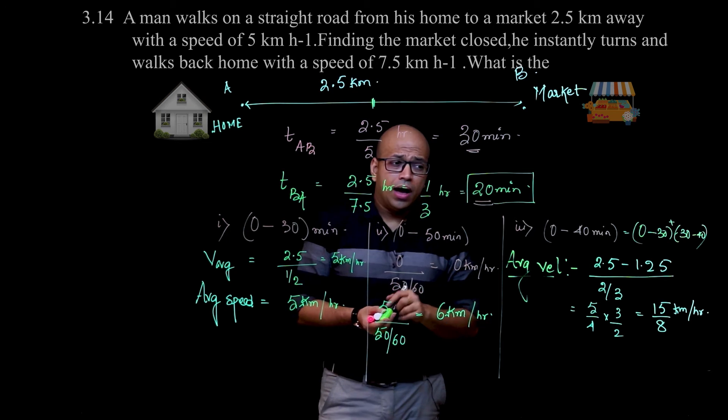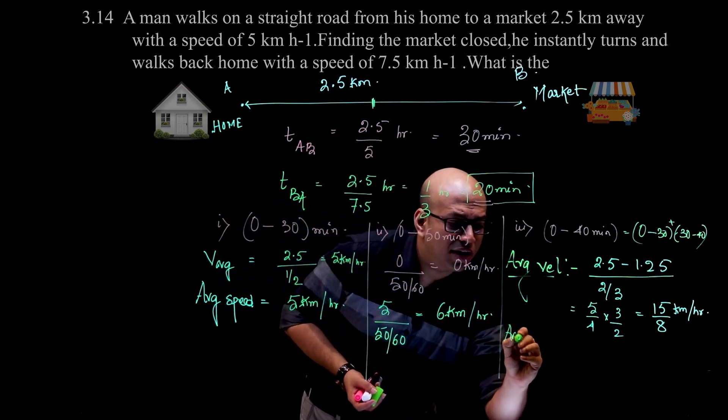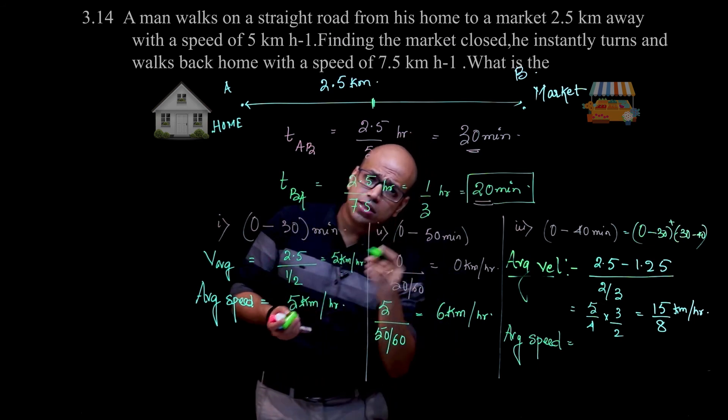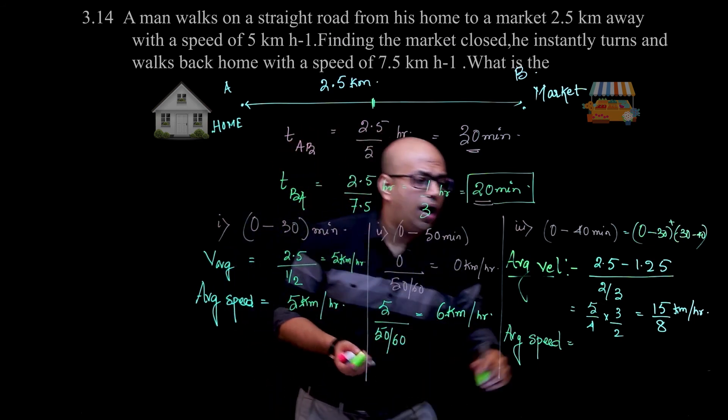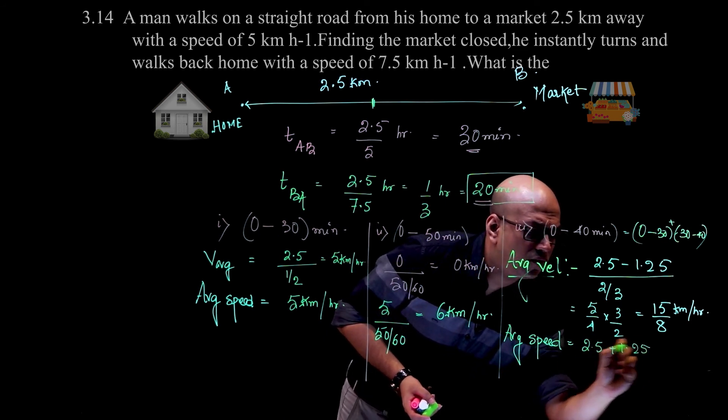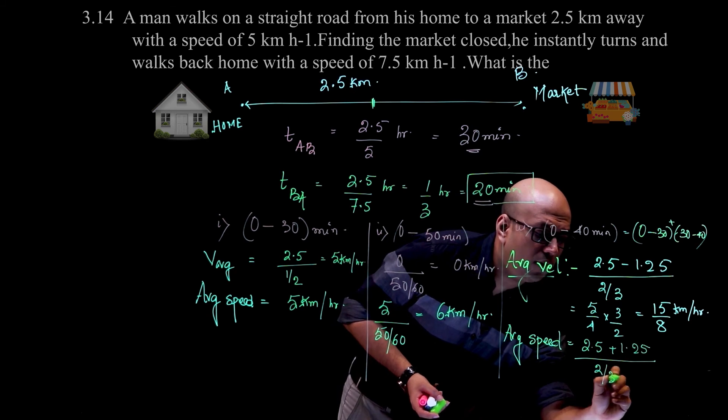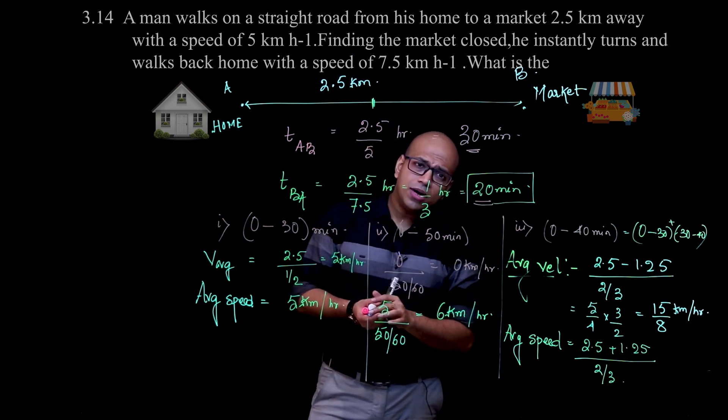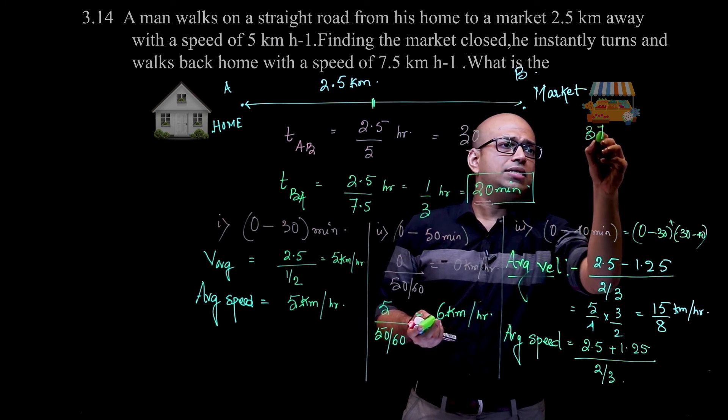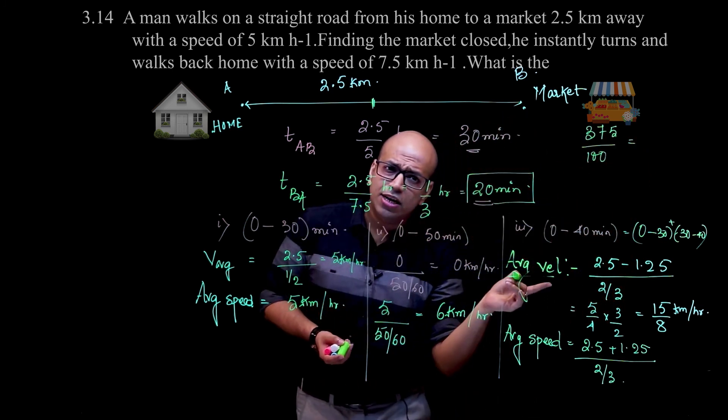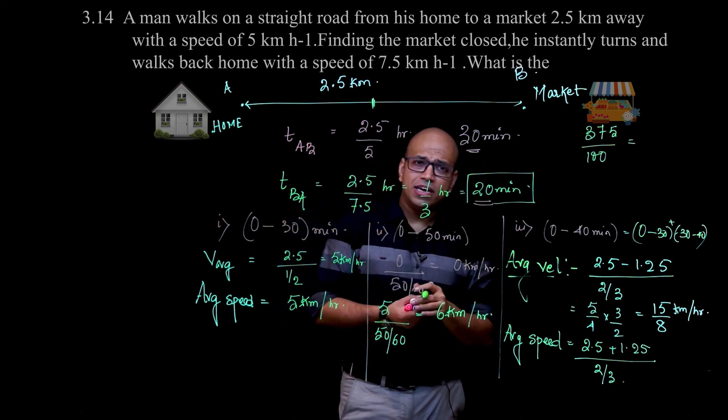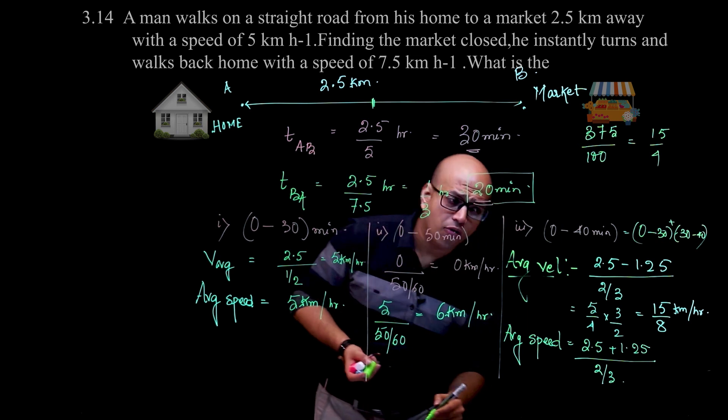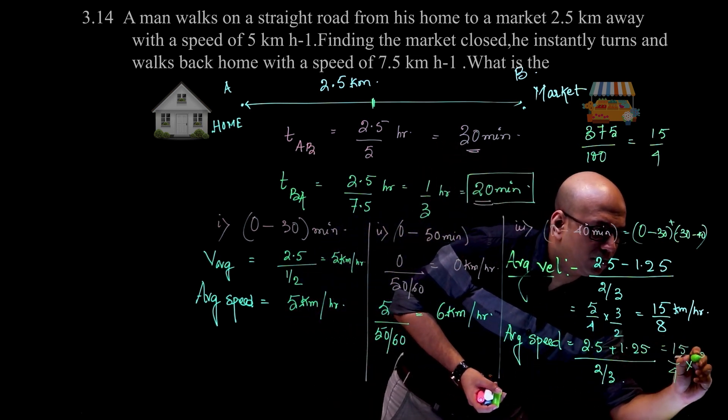Now for average speed: 2.5 kilometers plus 1.25 kilometers back, so 2.5 plus 1.25 equals 3.75 kilometers. Time is the same, 2/3 of an hour. 3.75 can be written as 375/100 - divide both by 25 to get 15/4, then multiply by 3/2, giving you 45/8 kilometers per hour.